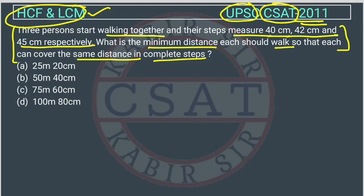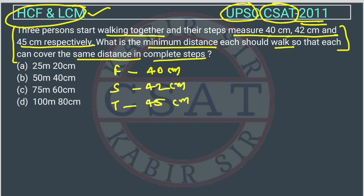In the exam this looks like a puzzle, but what we have to find out: there are three persons — first, second, and third — with steps of 40 centimeter, 42 centimeter, and 45 centimeter. The question asks for the minimum distance at which they will first meet, or in other words, what is the minimum distance each should walk so that each can cover the same distance.